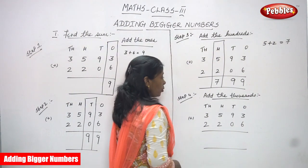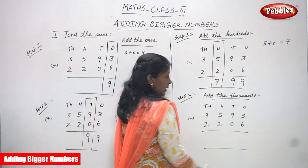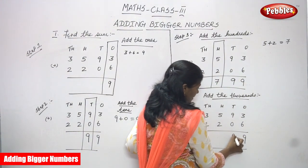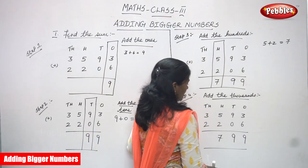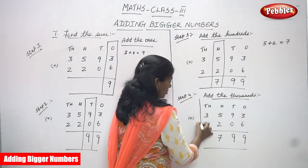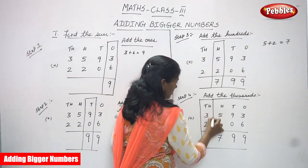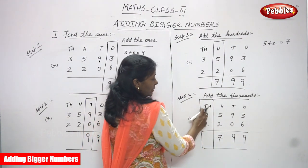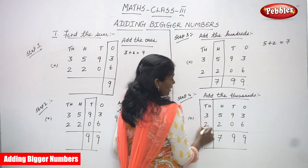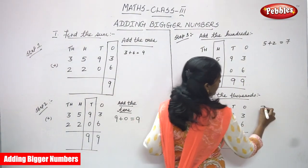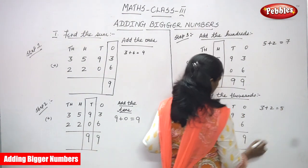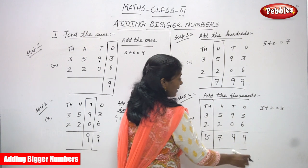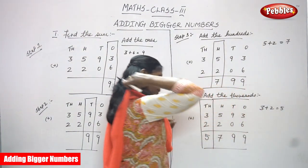Step four: add the thousands. I've written ones place answer nine, tens place answer nine, and hundreds place answer seven. There is no carryover, so just add simply. The values in the thousands place are three and two. Three plus two equals five. So the final answer is five seven nine nine - that is 5799.